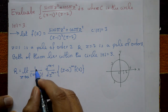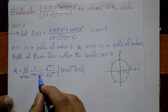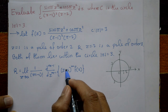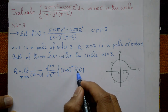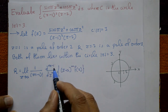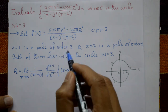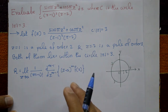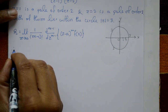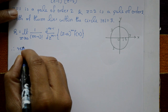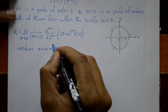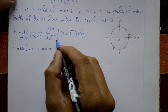The residue formula is: R = limit as z tends to a of 1/(m-1)! × d^(m-1)/dz^(m-1) × (z-a)^m × f(z). For the first pole at z = 1, order is 2, so m = 2. For the second pole at z = 2, order is 1, so m = 1.